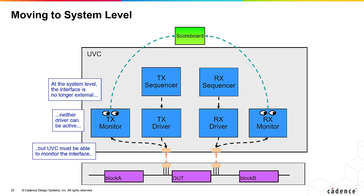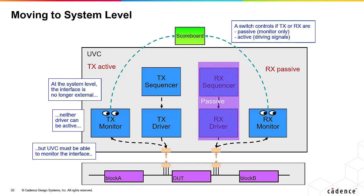Therefore, our UVC needs switches to control if the TX or RX sides are active, in which case they drive data, or passive, in which case they can only monitor the DUT. If either side is passive, the sequencer and driver are not created. This allows reuse of our UVC at system level simply by flipping a switch.